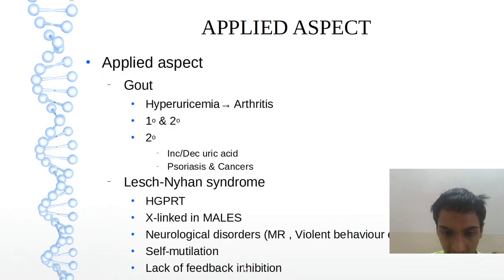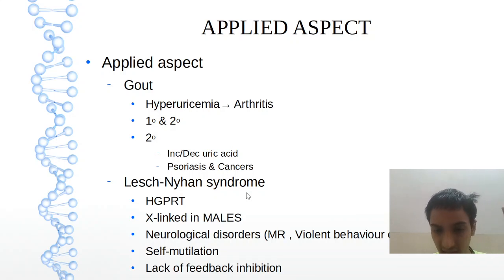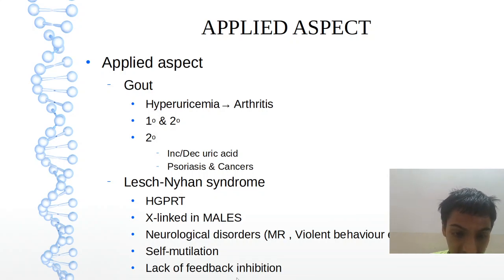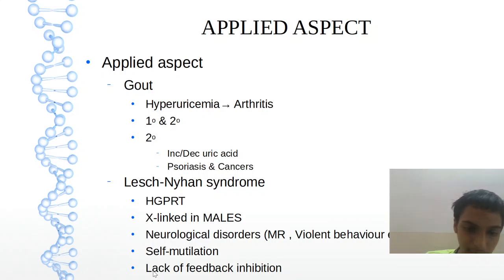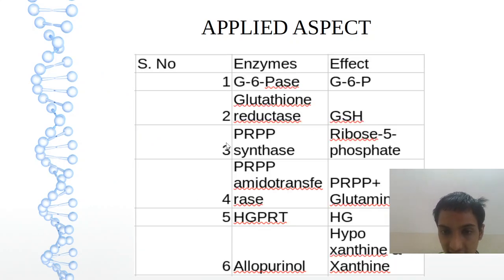Lesch-Nyhan syndrome is X-linked and common in males. It leads to self-mutilation — biting the nails, clipping the fingers, mental retardation, violent behavior, etc. There is a lack of feedback inhibition. Just like aspartate transcarbamylase and PRPP glutamyl amidotransferase, these enzymes will also do feedback inhibition. These are the enzymes and the effects they cause.